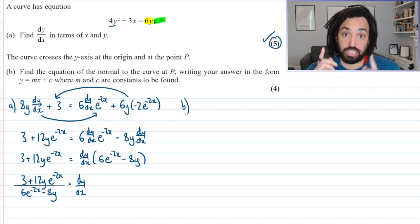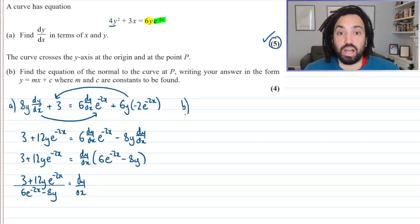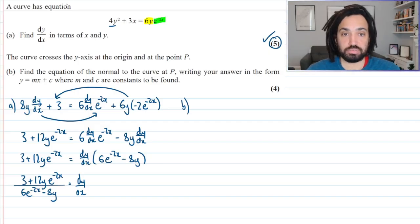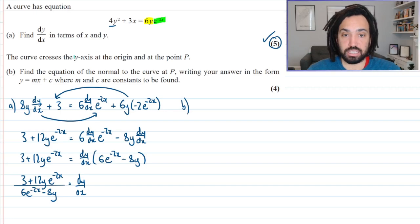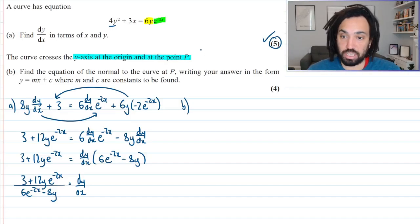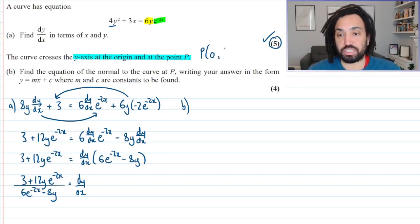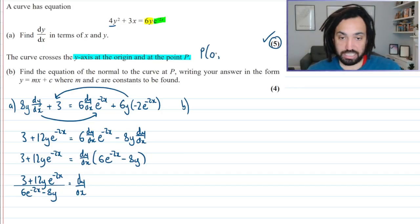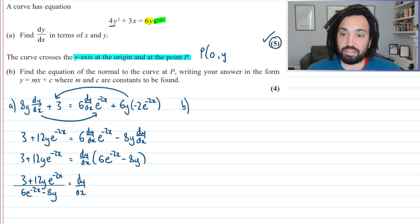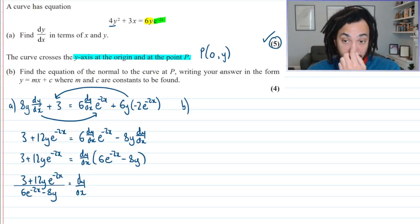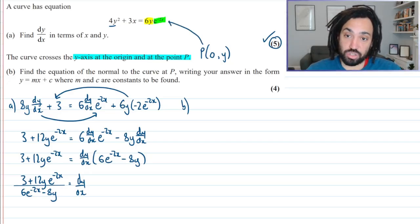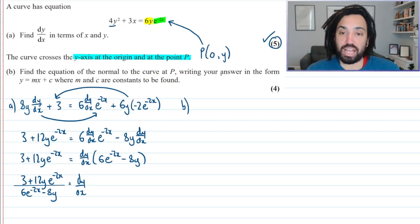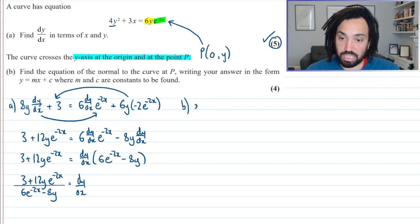This is part b. So it says the curve crosses the y-axis at the origin and at the point P. Well, if it crosses the y-axis at the origin and at the point P, it means that the point P must have an x-coordinate of 0, because it goes through the y-axis, which means that its x-coordinate is 0. And then it will have some y-coordinate, which we don't know yet. But what we could do is we could sub it into our original curve, and that will tell us exactly where it crosses the y-axis if we sub in x equals 0.